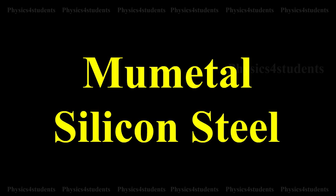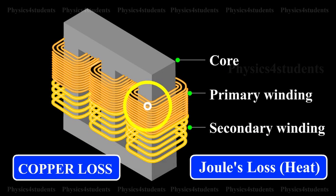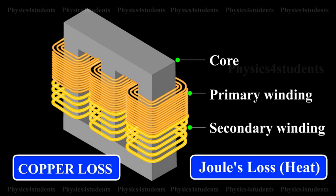Alloys like mu metal and silicon steel are used to reduce hysteresis loss. Copper Loss: The current flowing through the primary and secondary windings leads to the Joule heating effect. Hence, some energy is lost in the form of heat. Thick wires with considerably lower resistance are used to minimize this loss.